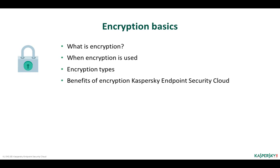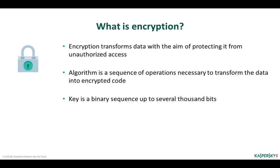As you know from history lessons, encryption was used for secret message exchange as early as Roman times. Much time has passed and encryption tools have been improved considerably since then, but the general purpose remains the same. Encryption is a tool that protects data from unauthorized access. It is based on transforming a message or text into an outwardly meaningless sequence of symbols. To decrypt such a message, it is necessary to know the secret that allows transforming the encrypted message back into the original text.